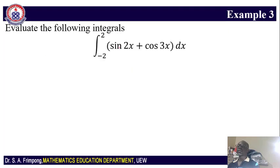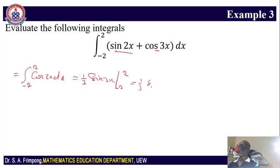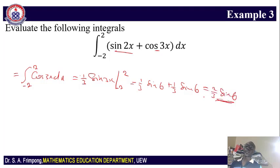Now let's look at this integral: the integral from negative 2 to 2 of cos(3x) dx. This is going to give us (1/3)sin(3x) from negative 2 to 2. When you compute that, you get (1/3)sin(6) plus (1/3)sin(6), which gives us (2/3)sin(6). So that is the value of that integral.